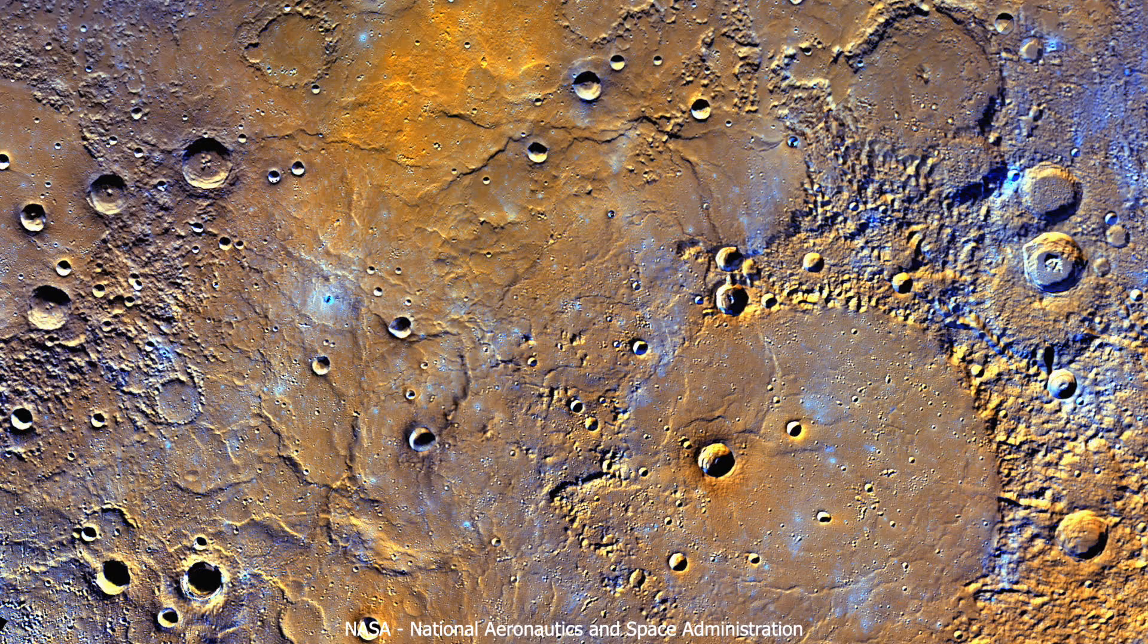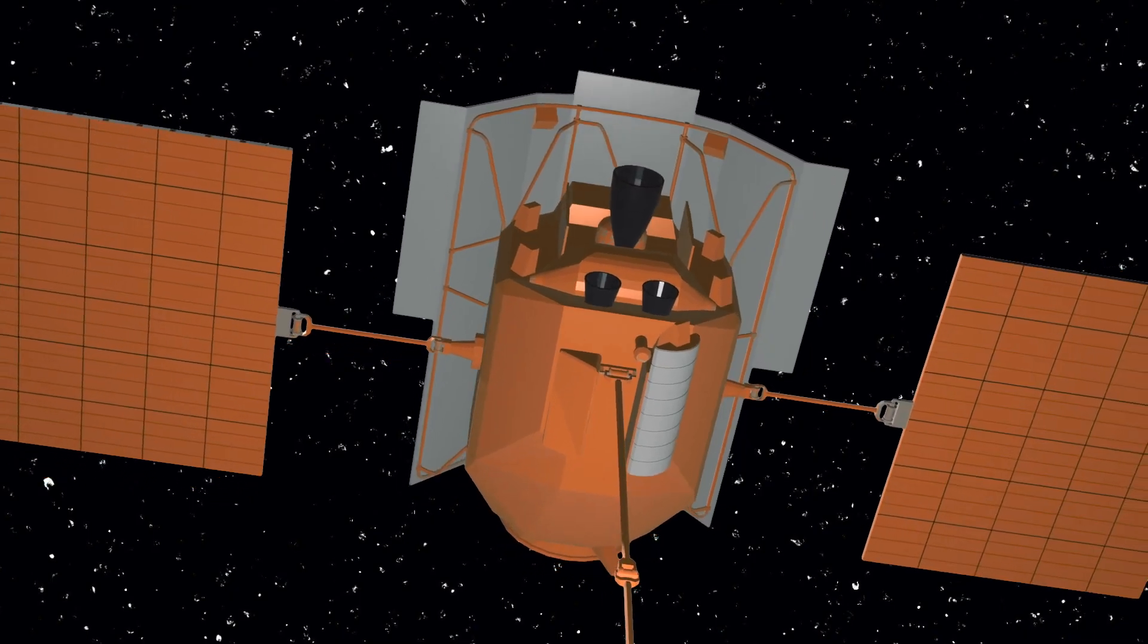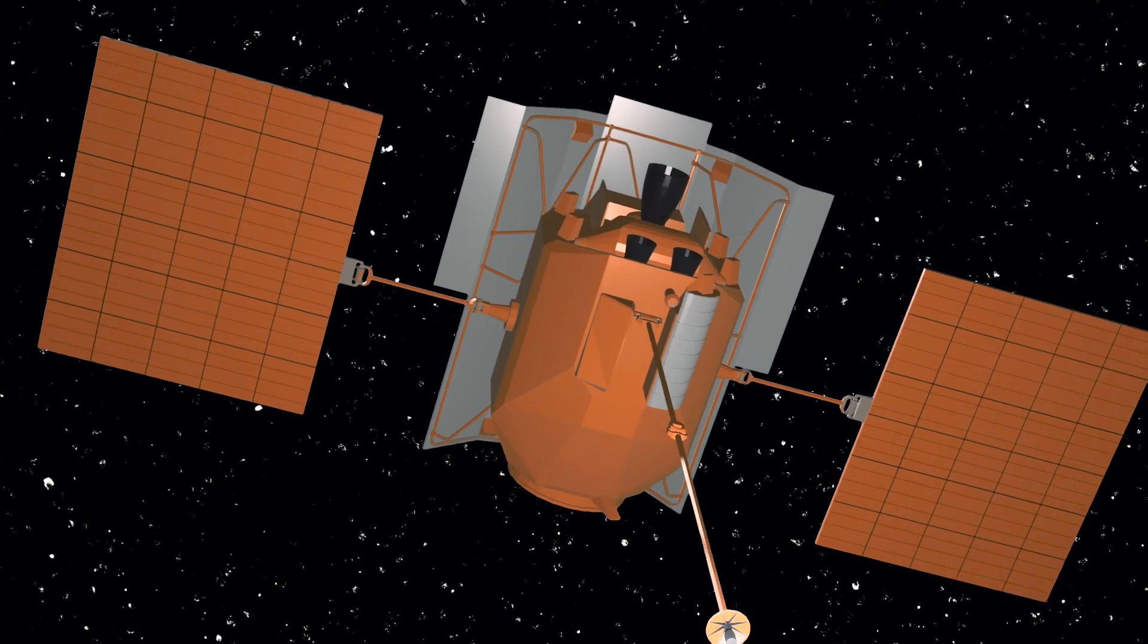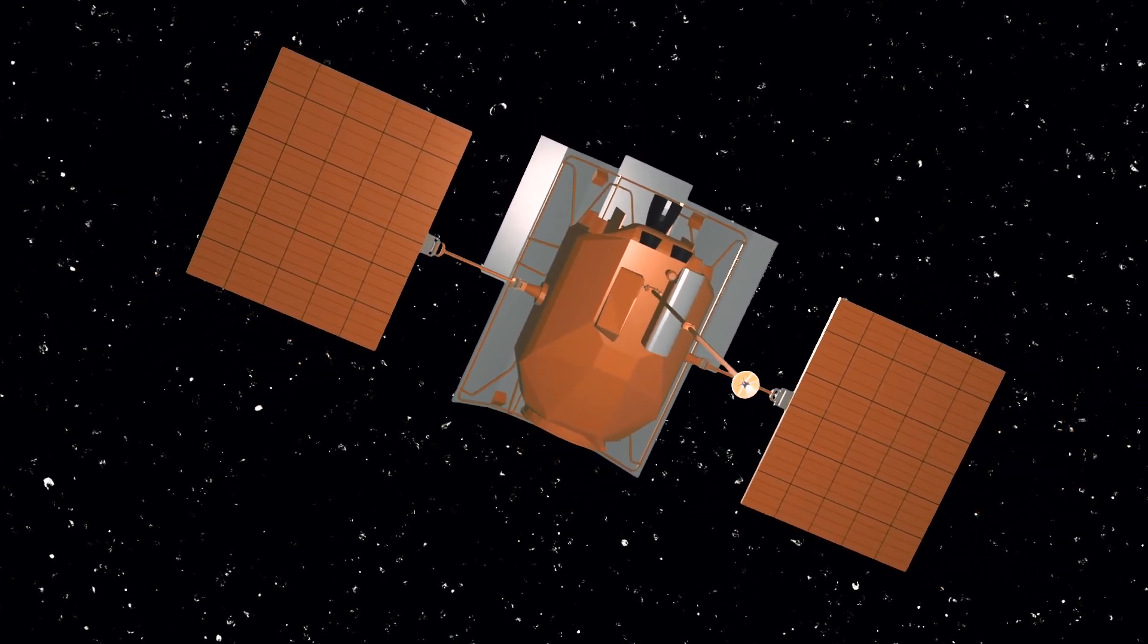It became the second spacecraft to visit Mercury after Mariner 10. In 2011, it sank into a stable orbit around the planet, and for the next four years captured hundreds of thousands of photographs of the surface. It also carried an array of cutting-edge scientific instruments to study the chemistry, geology, and magnetic properties of Mercury.